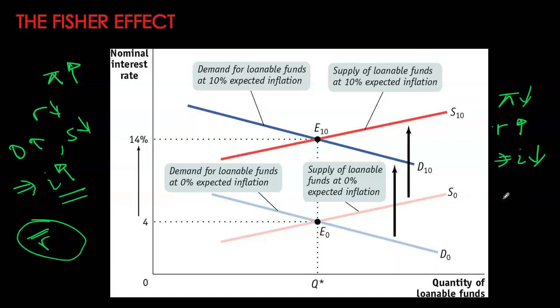Our demand-supply analysis very nicely confirms the Fisher effect: nominal interest rates always move in the same direction as expectations of inflation. If inflation is expected to go up, nominal interest rates will rise by the same amount; if inflation goes down, nominal interest rates also move in the same direction and by the exact same amount, leaving real interest rates unchanged in the long run. Next, we look at the global loanable funds market.